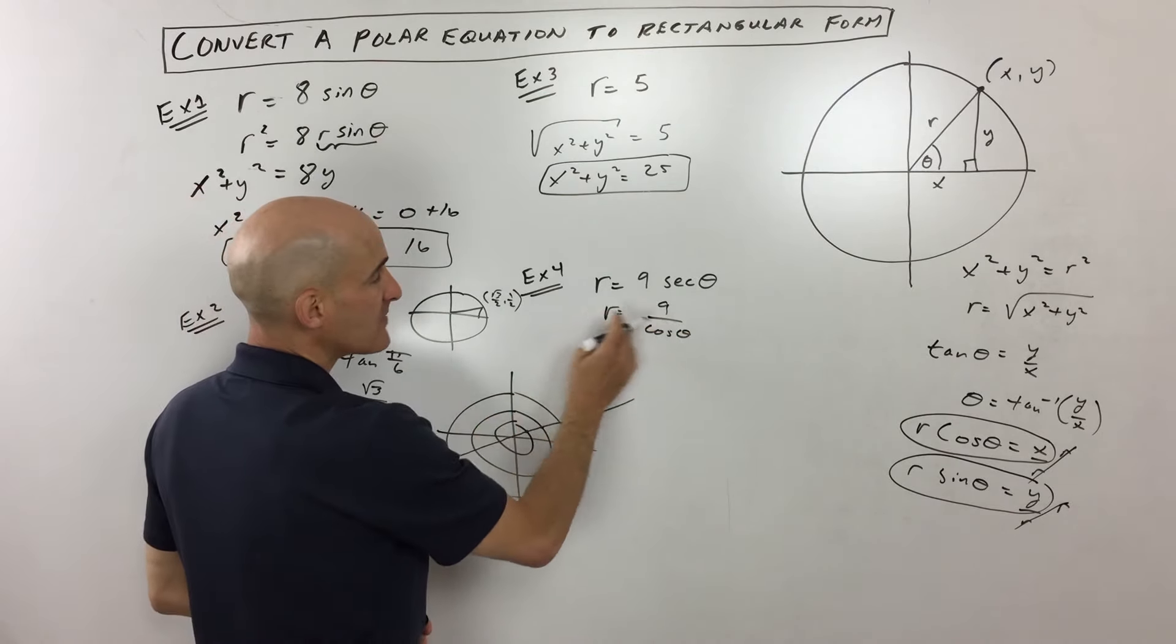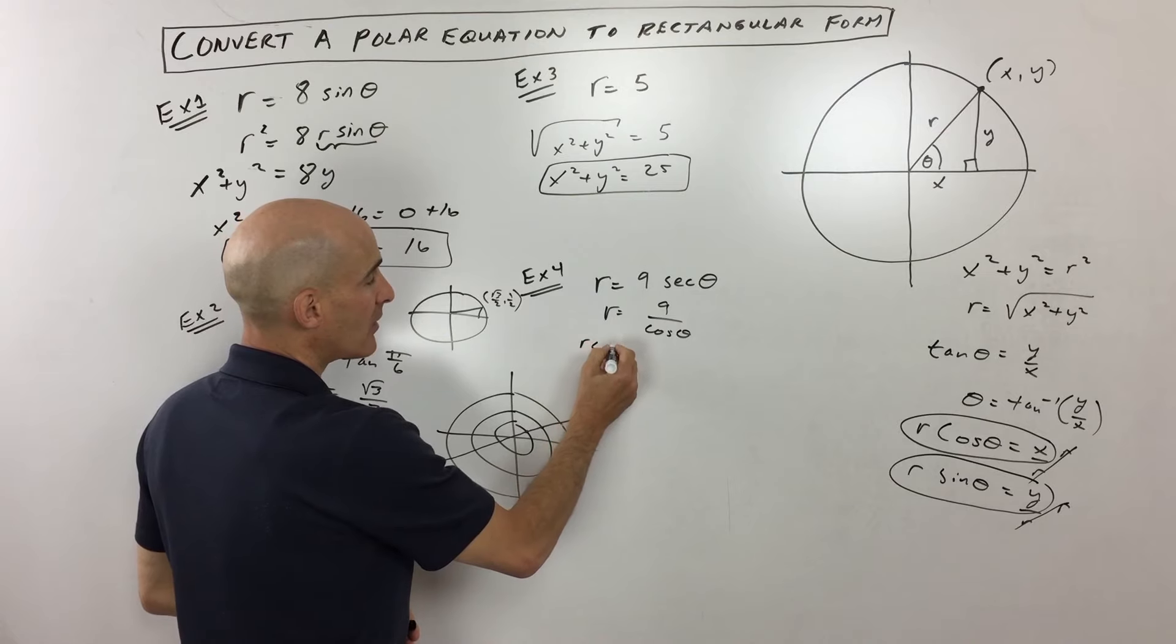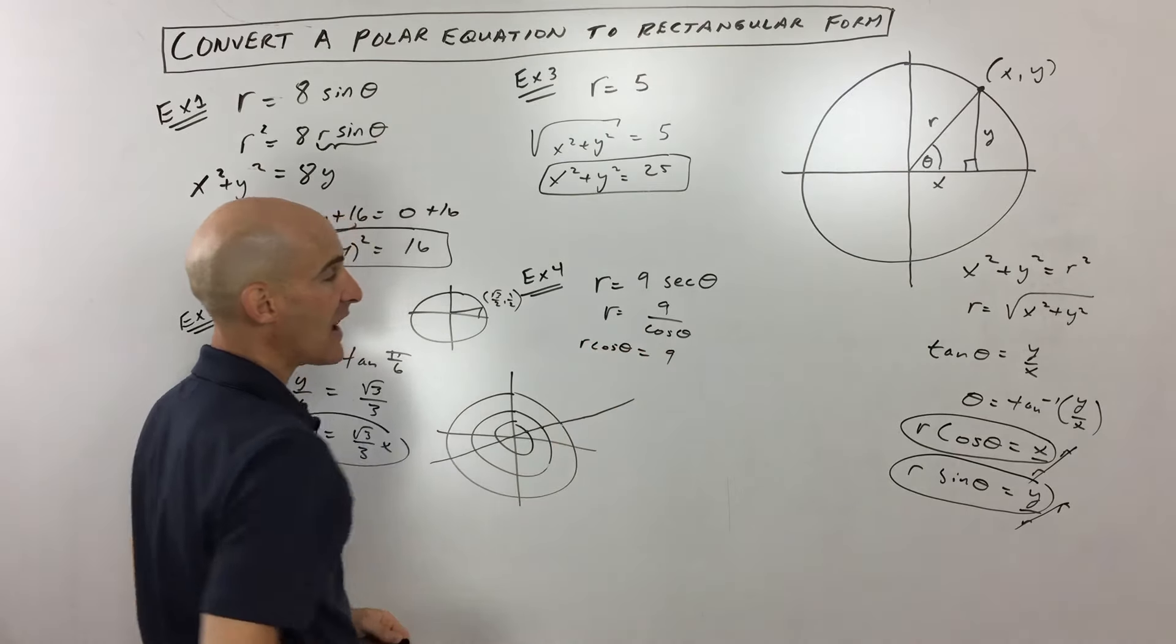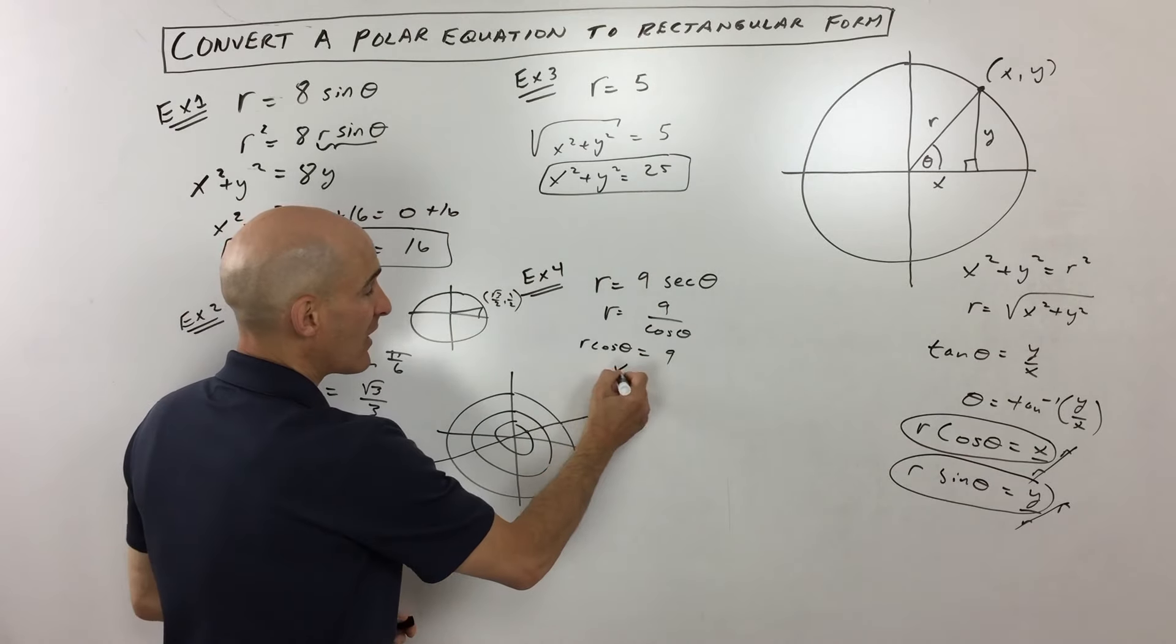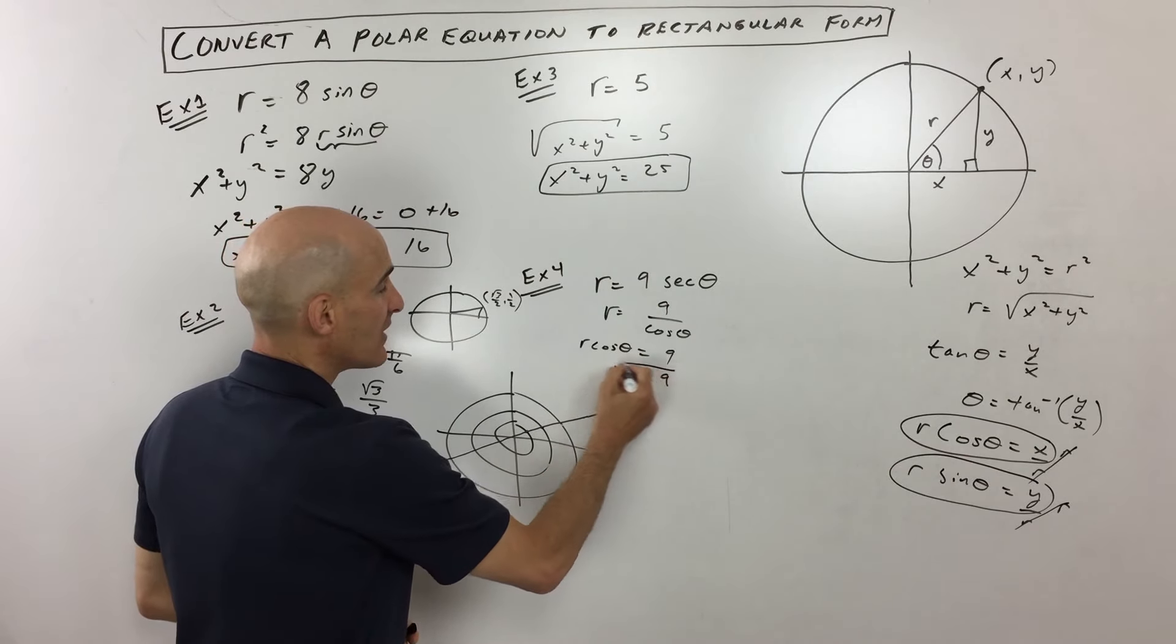If we multiply both sides by cosine theta, we get r cosine theta is equal to nine. And what does r cosine theta equal? Well, that equals x. So we've got x equals nine.